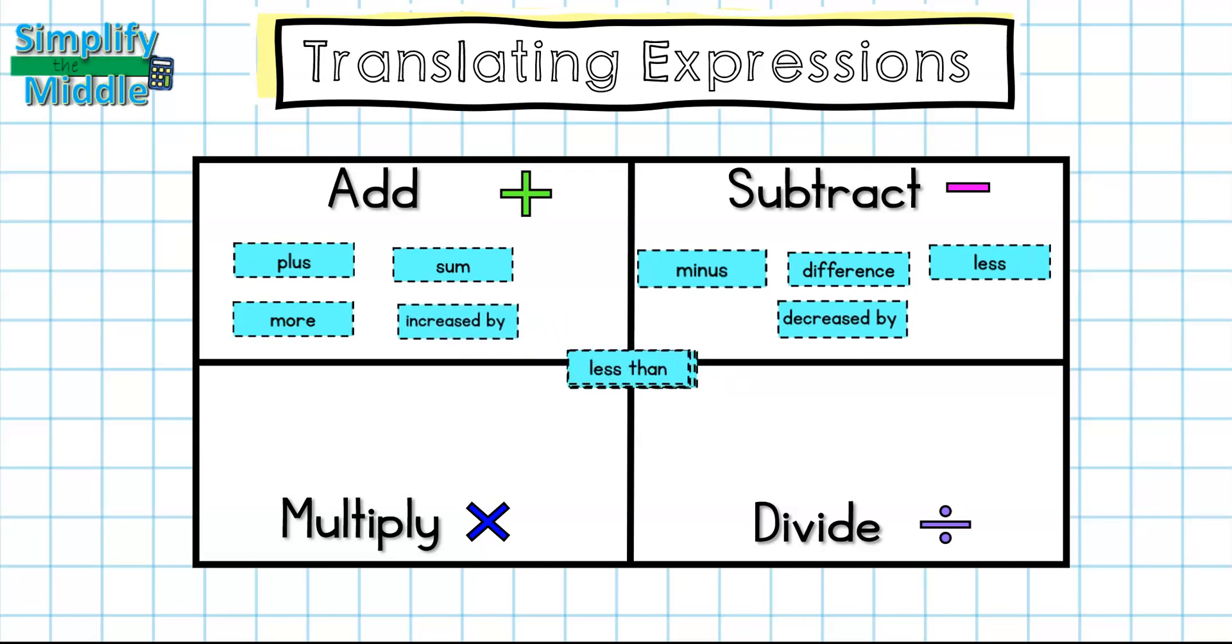Less than is a subtraction, from is subtraction, quotient is the answer to a division problem, product is the answer to a multiplication problem, double means multiply by two, half means divide by two.